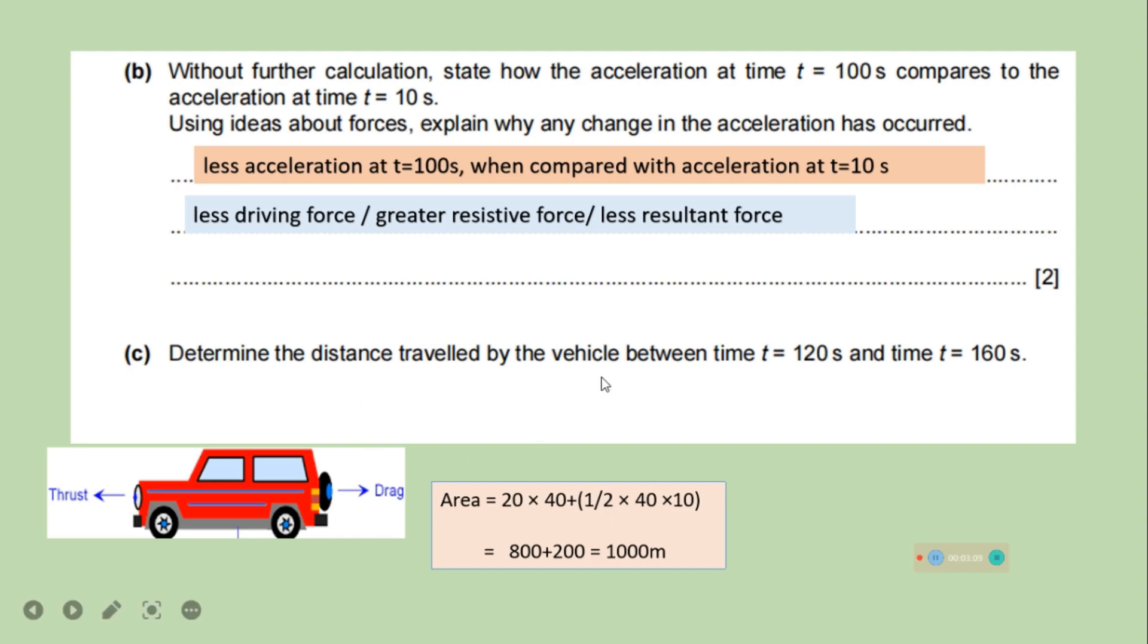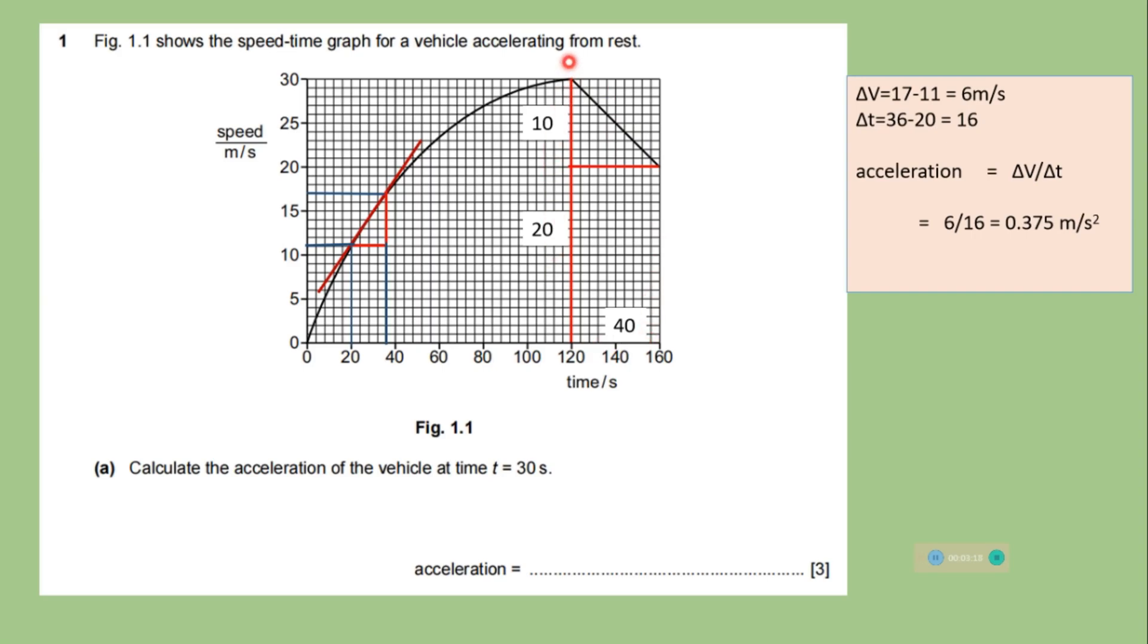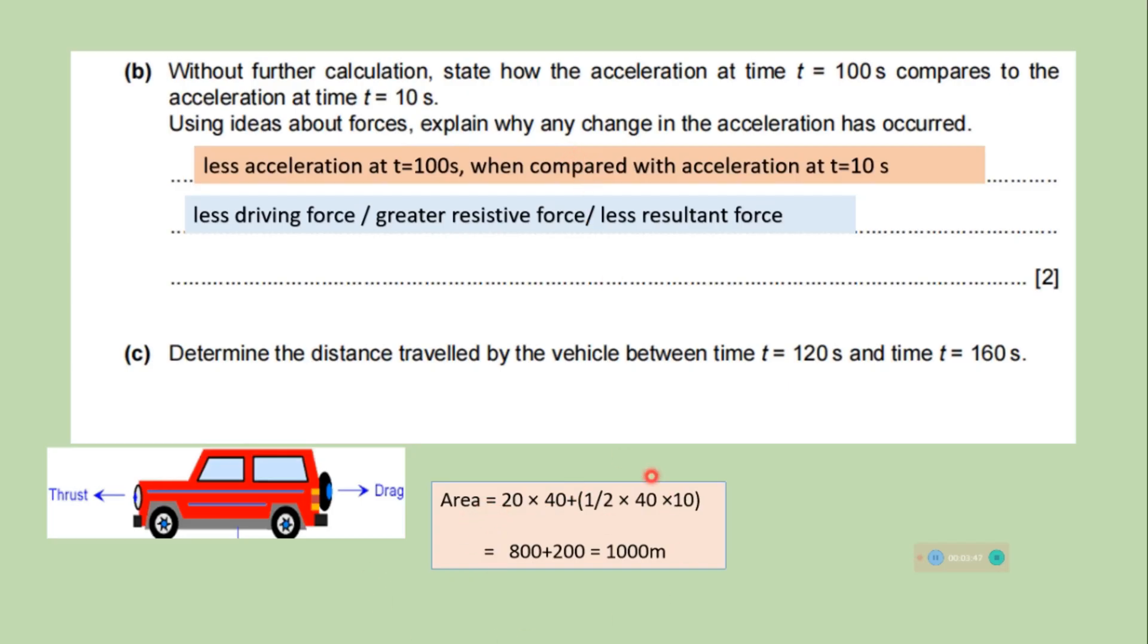Determine the distance traveled by the vehicle between time t equals 120 seconds and time t equals 160 seconds. So we have to calculate the area under this graph here for time t 120 to 160. We can break this whole area by rectangle and triangle. And one side is 40, another side is 20. For the triangle, the base is 40 and height is 20. Use the formula, multiplication of two sides for rectangle to calculate area. And for triangle, it is half multiplied by base multiplied by height. So we have calculated here. Pause the video. You can check all the calculation. Area is 1000 meters.